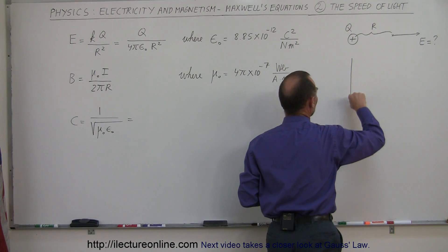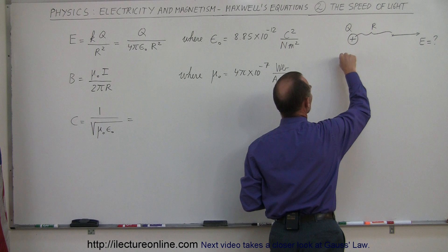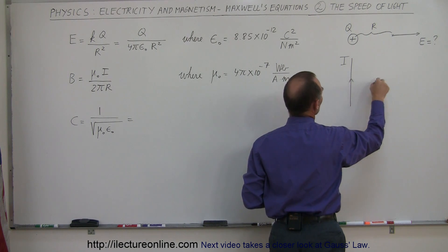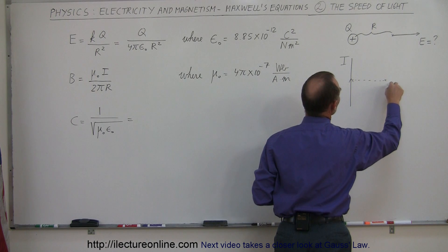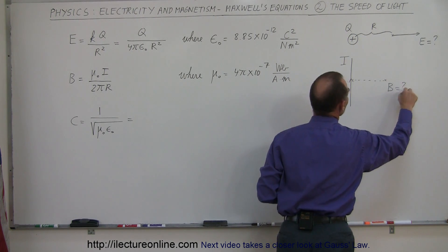So if we have a wire that has current flowing through the wire, let's say current is equal to i, and we're a certain distance away from that point, let's say this far away right here, what is the strength of the magnetic field?